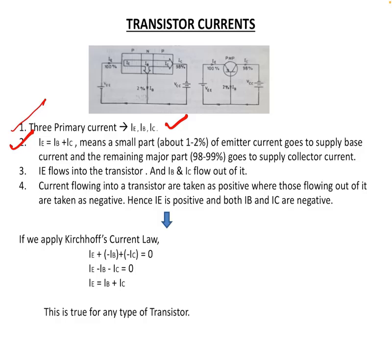Point number two: in a PNP transistor, the current directions are opposite to those of an NPN transistor. In the PNP transistor, current enters the emitter and flows to the collector and the base.